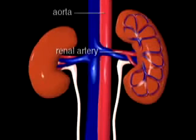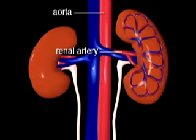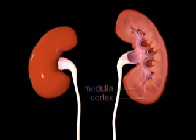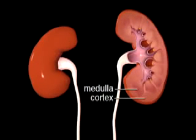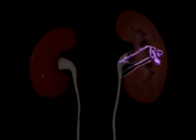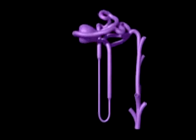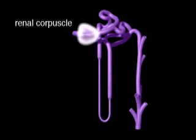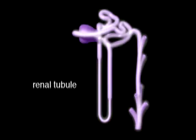A renal artery supplies each kidney with blood. The blood is distributed to over a million nephrons, the functional units of the kidney. Nephrons are found in the cortex and medulla of the kidney. Each nephron is composed of the renal corpuscle and the renal tubule.